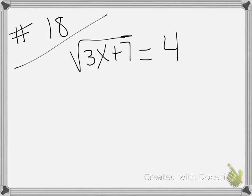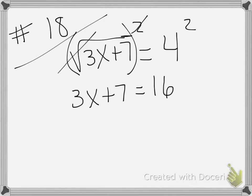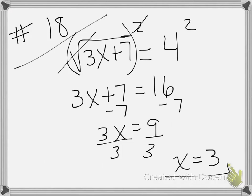The next problem is number 18 where we're solving a radical equation. This is the square root of 3x plus 7 equals 4. To get rid of a square root I square both sides. The square cancels the square root and leaves me with 3x plus 7. 4 to the second power is 16. Now this is a normal equation where I want to get x by itself. So I subtract 7 from both sides which gives me 3x equals 9. Divide both sides by 3 and x is going to be 3.